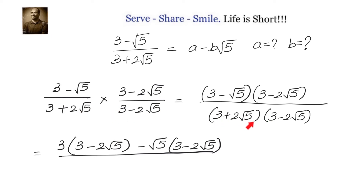The whole idea of multiplying with the conjugate is so that we can remove the irrational values. Since a plus b into a minus b equals a squared minus b squared, we can write the denominator as 3 squared minus 2 root 5 whole squared.